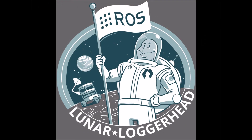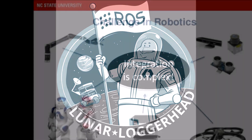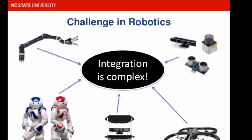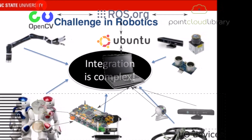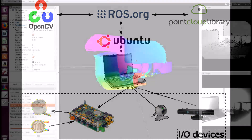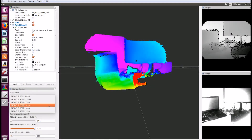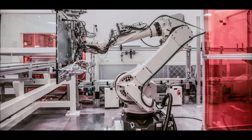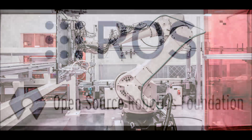The main ROS client libraries are geared toward Unix-like systems, primarily because of their dependence on large collections of open-source software dependencies. Ubuntu Linux is listed as supported, while other variants such as Fedora Linux, macOS, and Microsoft Windows are designated experimental and are supported by the community.